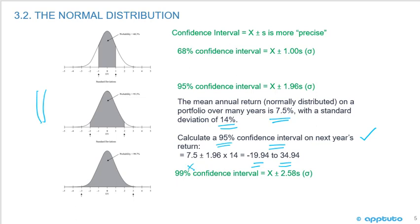We did the mean plus or minus 1.96. That's for the 95% confidence interval. We used the mean plus or minus 1.96 standard deviations. And the standard deviation was 14. So 7.5 plus 1.96 times 14 is going to be 34.94. 7.5 minus 1.96 times 14 is going to be negative 19.94.